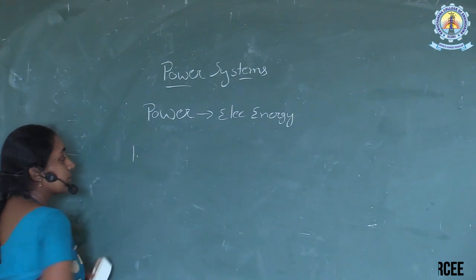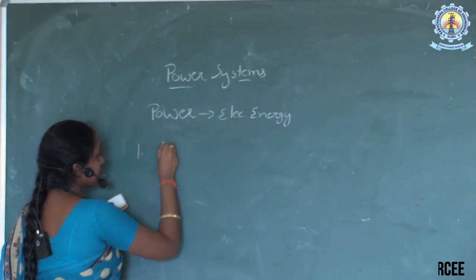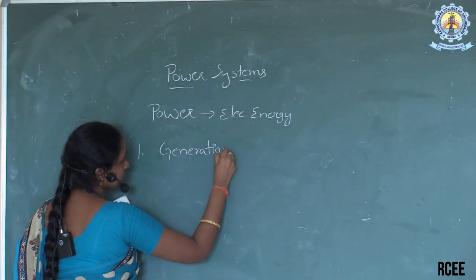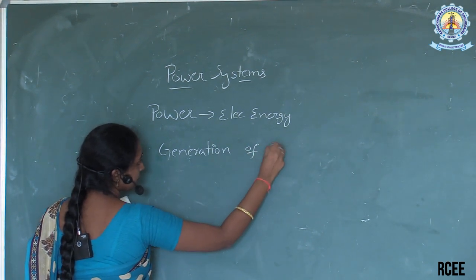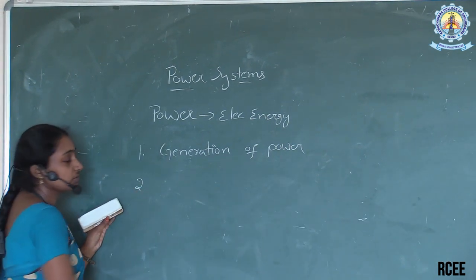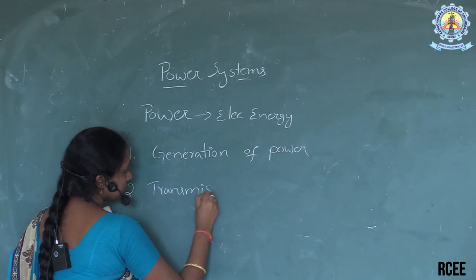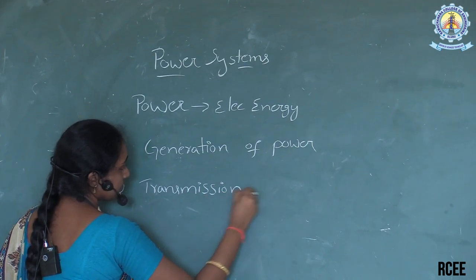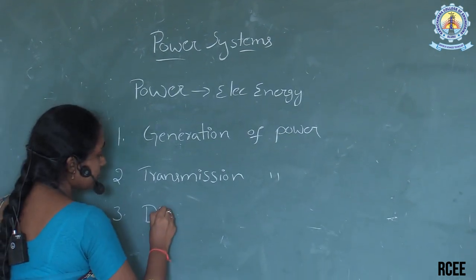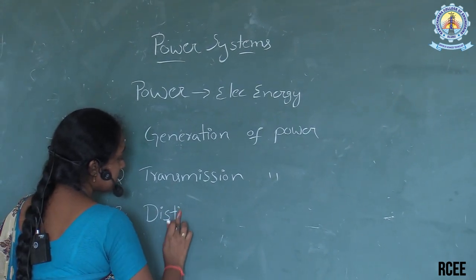There are different stages of power transmission. First, we have to generate the power — generation of power. Next, we have to transmit that power — transmission of power. Third, we have to distribute for different types of consumers — distribution system.